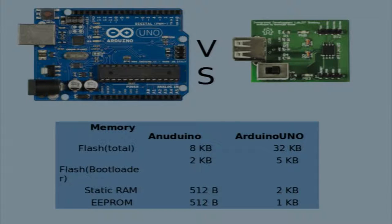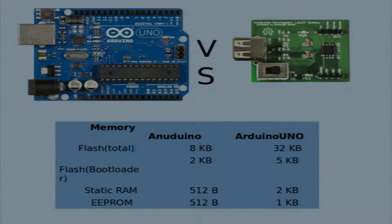Next comes memory. Anudino has a memory of 8 KB, of which 2 KB is occupied by its bootloader, so 6 KB remains for programming. Arduino has a memory of 32 KB, from which 5 KB is occupied by the bootloader.